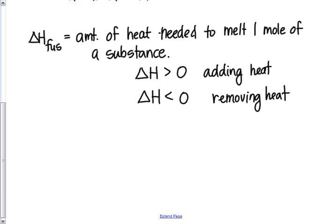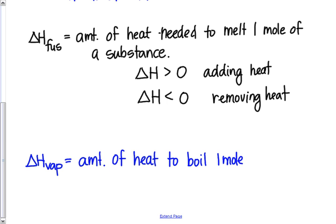Delta H vaporization has almost the same definition. It's the amount of heat needed to boil one mole of a substance. We'd want a positive delta H if we're adding the heat. We'd want a negative delta H if we're removing the heat. We just physically change the sign, make it a negative number.